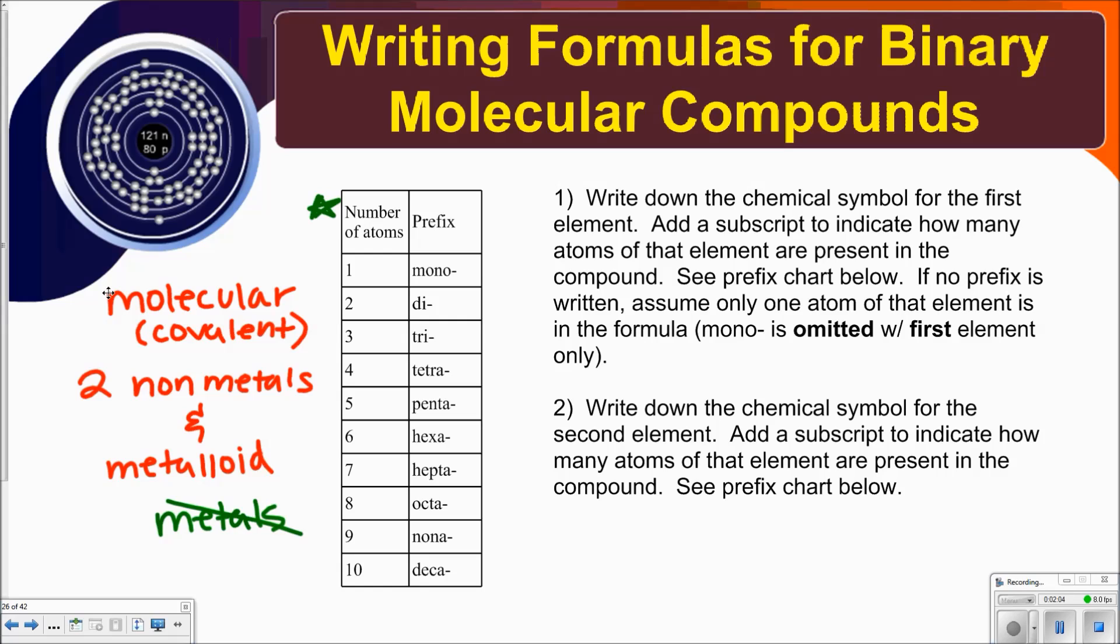A lot of these are familiar to you because they're prefixes for shapes you're familiar with. Like a triangle has three sides, a pentagon has five sides, an octagon has eight sides. Or a tricycle has three wheels. So you're familiar with some of these. I'm going to forewarn you that kids tend to forget tetra and hepta. For whatever reason, those seem to be the two that are forgotten the most.